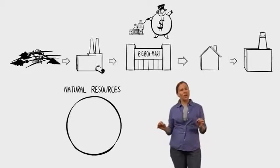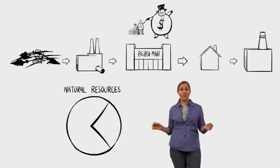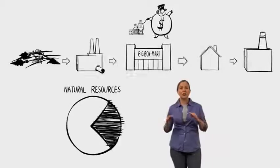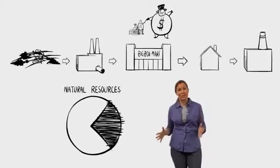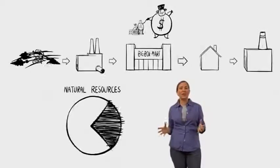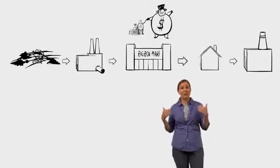In the past three decades alone, one-third of the planet's natural resource space has been consumed. Gone. We are cutting and mining and hauling and trashing the place so fast that we're undermining the planet's very ability for people to live here.